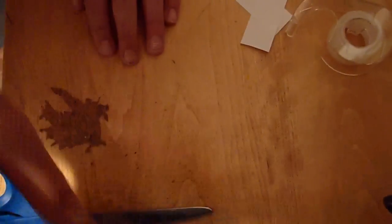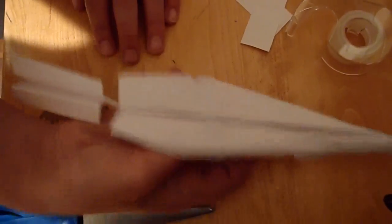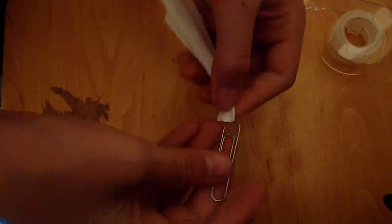So now you've got your tail. All you need to know is put the paper clip in the right place. Just put it right here on the nose, so it'll add some extra weight, otherwise it won't fly without it.